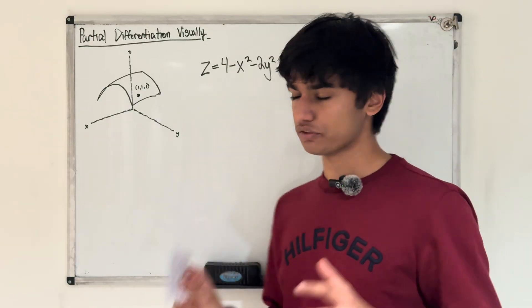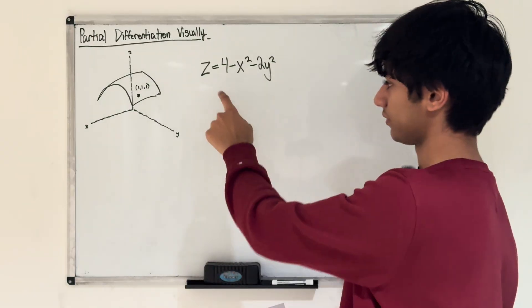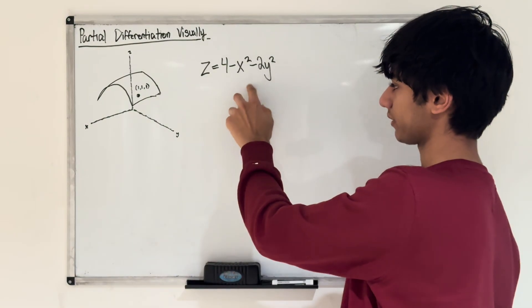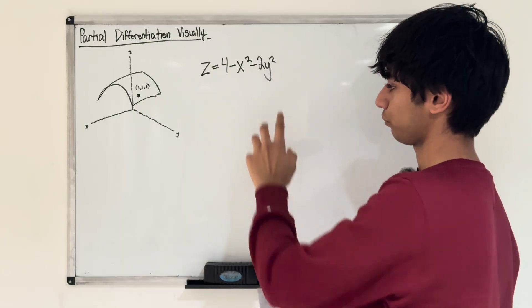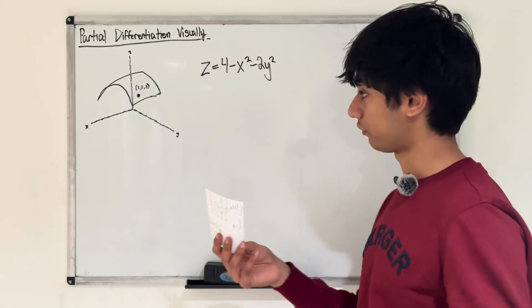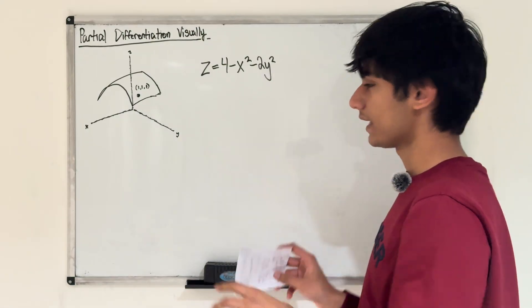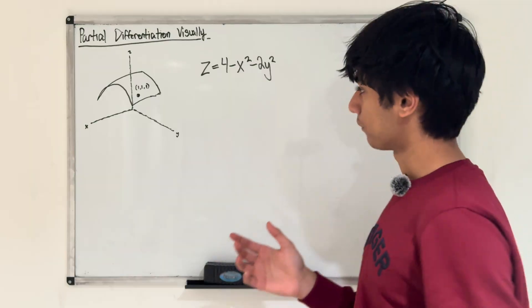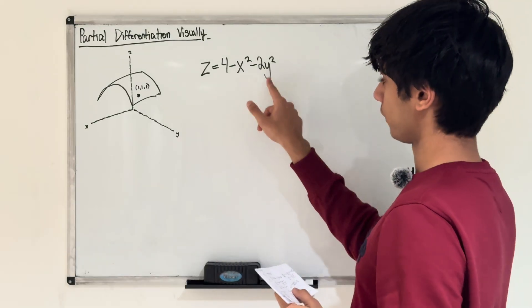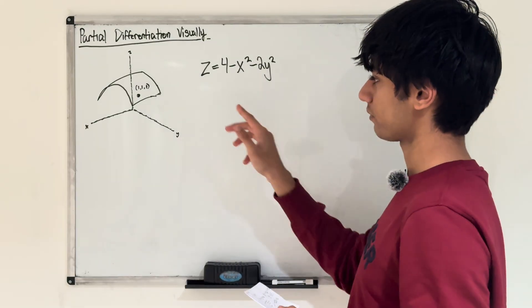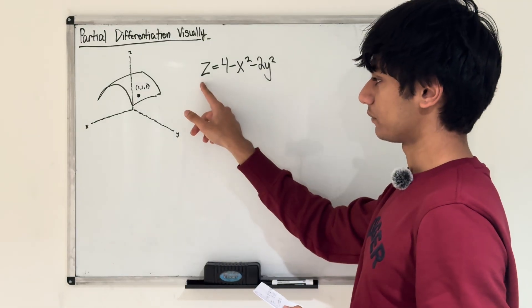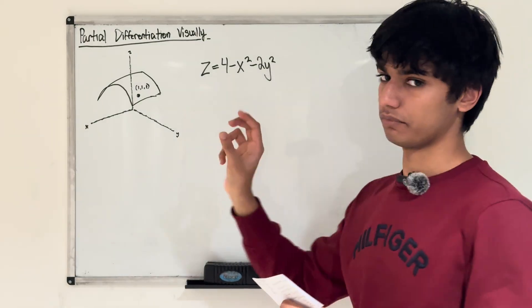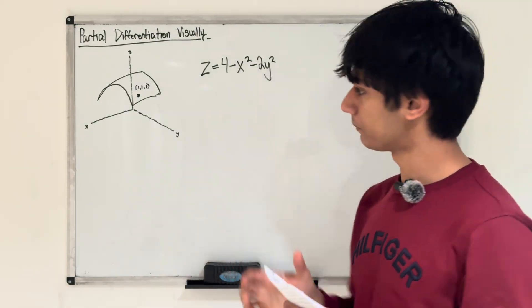To start, let's imagine we have this curve z equals 4 minus x squared minus 2y squared, which is a surface in 3D. More specifically, this is going to be an elliptic paraboloid, because we have two squared terms and they're both positive, and it equals a z term which is to the power of 1.